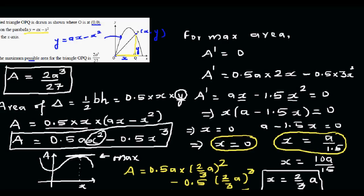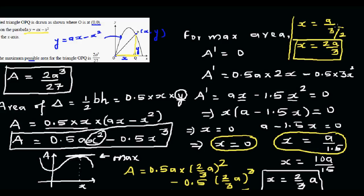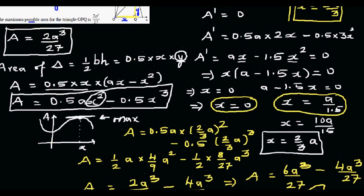For those confused about how X equals A/1.5 becomes 2A/3: dividing by 1.5 is the same as dividing by 3/2, which is the same as multiplying by 2/3. So X equals 2A/3. You then substitute this back into the area formula to obtain the maximum area of 2A cubed over 27.